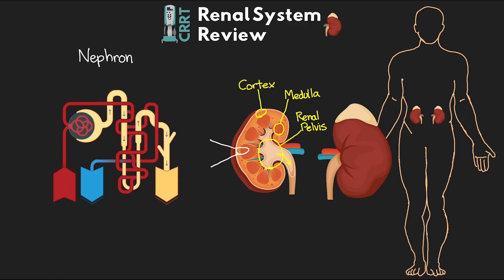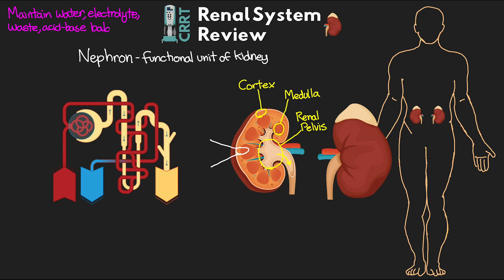The cortex and medulla contain various parts of the nephron, which is the functional unit of our kidney. Each kidney contains more than one million nephron units, and collectively they work to maintain the water, electrolyte, waste, and acid-base balance in our body through a pretty complex structure.